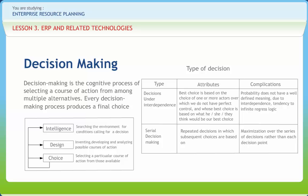Strategic decisions are the highest level, where a decision concerns general direction, long-term goals, philosophies, and values. Tactical decisions support strategic decisions — they tend to be medium range, medium significance, with moderate consequences. Operational or everyday decisions are used to support tactical decisions; they are often made with little thought and are structured.